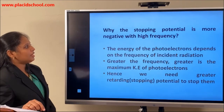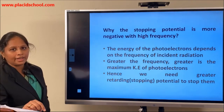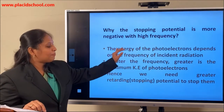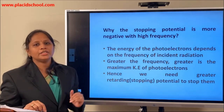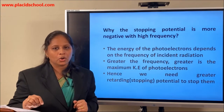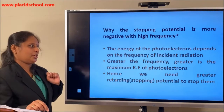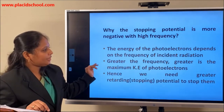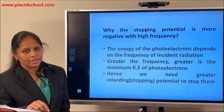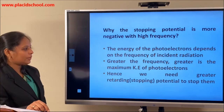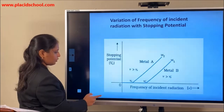Why is the stopping potential more negative at higher frequencies? This is an important result from this experiment. The energy of the photoelectrons directly depends on the frequency of the incident radiation. Greater the frequency, greater will be the maximum kinetic energy of the photoelectrons, and hence we need a greater retarding potential to stop the electrons.